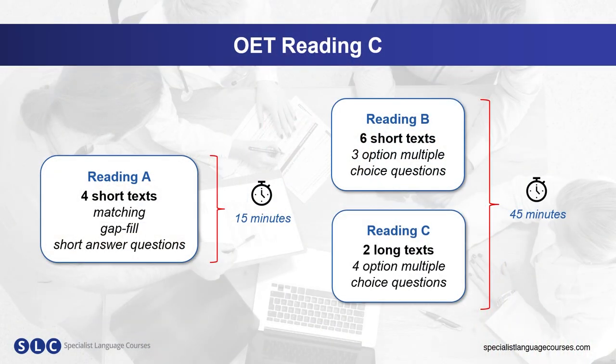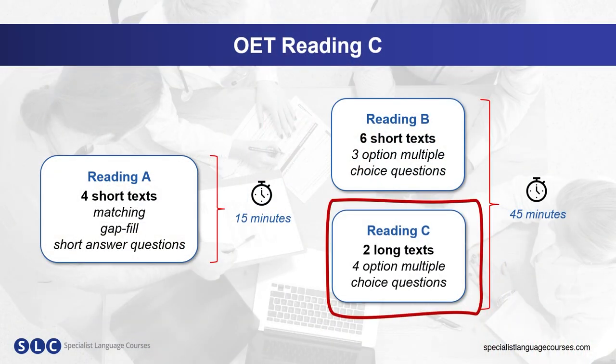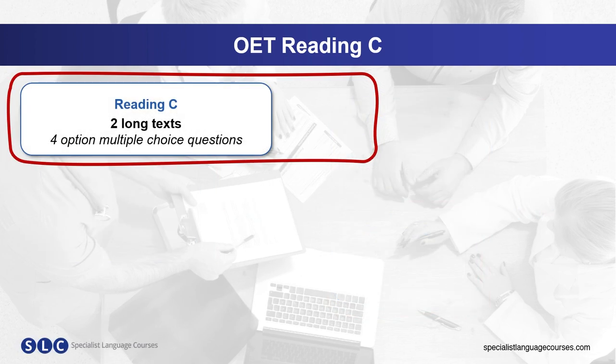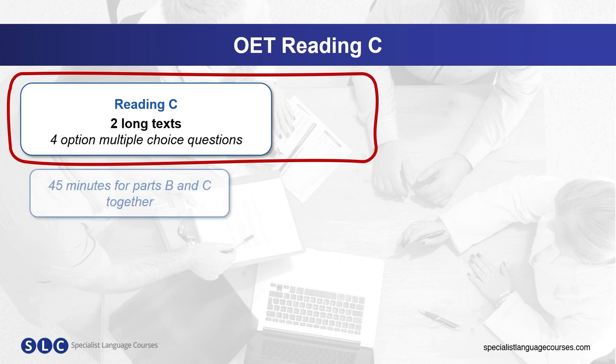There are three parts to the reading paper and we're going to focus on reading C. In reading C, there are two long texts and each question is a four-option multiple choice question. There are 45 minutes for parts B and C together, so you will need to spend approximately 32 to 33 minutes on part C.